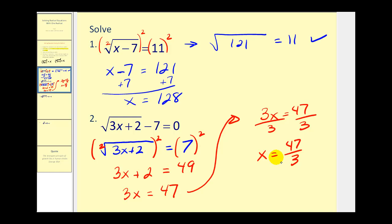Now you might think that's going to be hard to check but look what happens when you sub in 47 over three and then you multiply by three, those threes are going to simplify out. So this would become 47 plus two which is 49. The square root of 49 would be seven minus seven equals zero, so this checks as well.